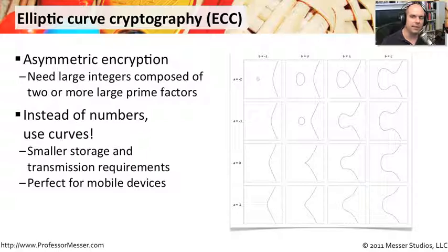What this means is that this is much simpler to calculate. So it takes fewer storage requirements. It's easier to transmit, especially over mobile connections. And mobile devices that already don't have a lot of memory and a lot of CPU can now use a simpler way of performing this asymmetric encryption.